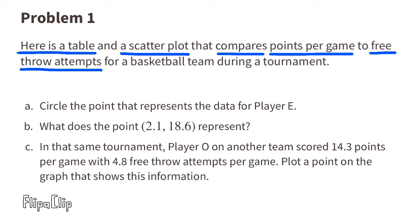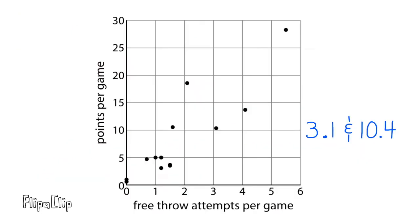Part (a): Circle the point that represents the data for Player E. The information tells us that Player E averaged 3.1 free throw attempts per game and 10.4 points per game, so I would circle this point here.